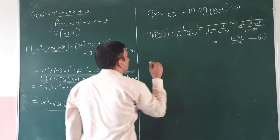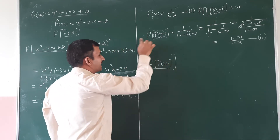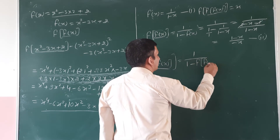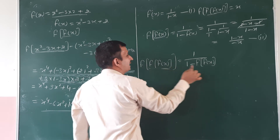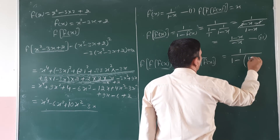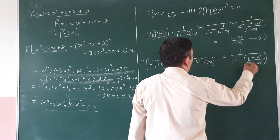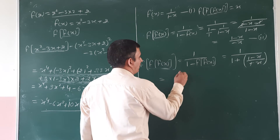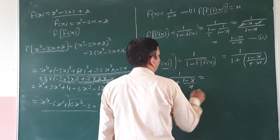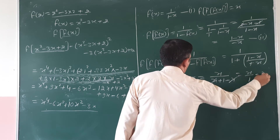अब f(f(f(x))) निकालना है। f(f(f(x))) = f(f(f(x))): हम जहाँ पर भी x होगा, वहाँ f(f(x)) = (1-x)/(-x) रखेंगे। तो f(f(f(x))) = 1/(1 - (1-x)/(-x))। Denominator में LCM लगाने पर: (-x-(1-x))/(-x) = (-x-1+x)/(-x) = -1/(-x) = 1/x। इसलिए f(f(f(x))) = 1/(1/x) = x। Hence proved।